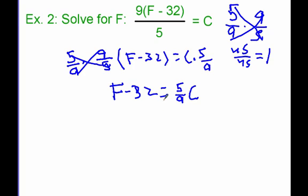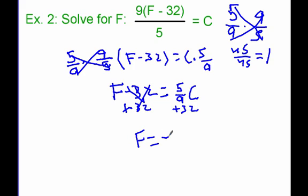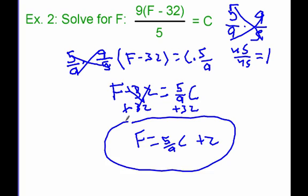Now if I want to get f by itself, all I have to do is add 32 to both sides. These cancel, and I'm left with f equals 5 ninths c plus 32. I can't do any more simplifying, so this is my answer — I've solved for f.